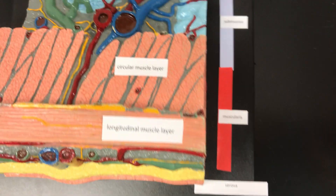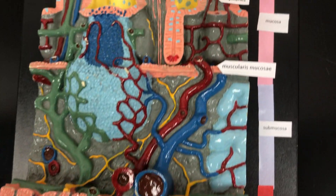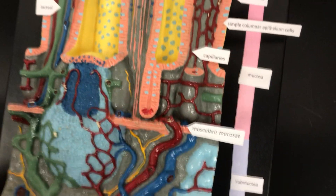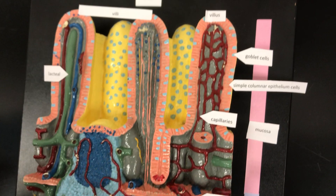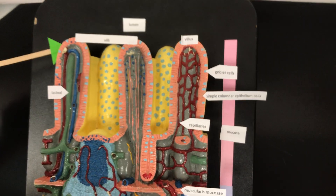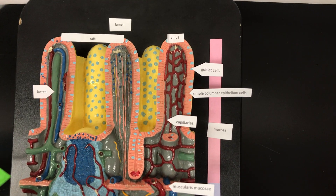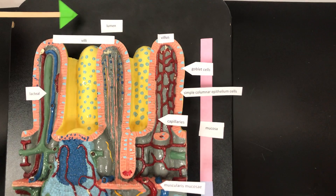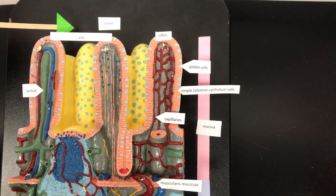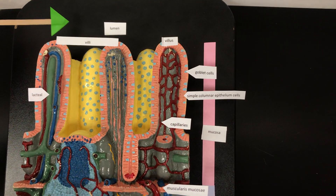This is a tour of the histology of the small intestine. There are four layers in the alimentary canal. The mucosa layer lines the lumen, that's the cavity of the alimentary canal.